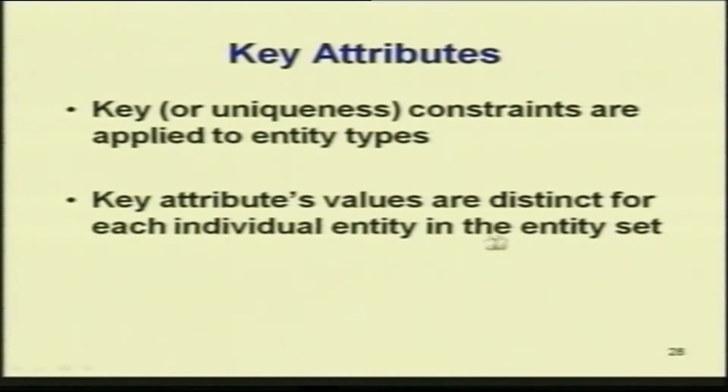Key attributes: uniqueness constraints are applied to entity types. Key attributes are distinct for each individual entity in the entity set. For example, suppose I have 1000 tuples corresponding to student — there should be one attribute whose value is unique for each and every of these 1000, 10,000, or 20,000 tuples. Each and every tuple should have a unique value for this particular key attribute.